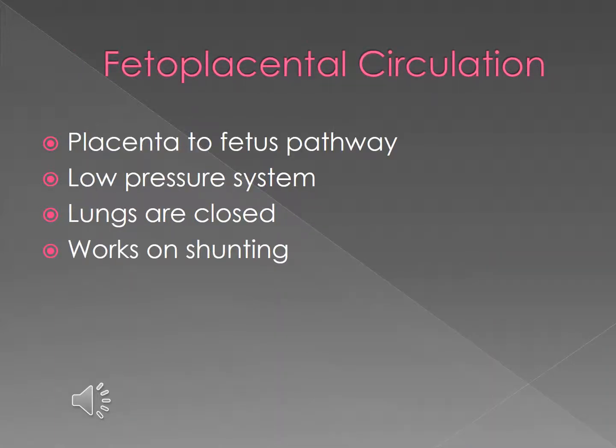The umbilical cord consists of two umbilical arteries which return non-oxygenated blood, fetal waste, and carbon dioxide to the placenta. The umbilical vein brings oxygenated blood and nutrients to the fetus. The fetus depends on the placenta to meet oxygen needs while organs continue formation. Oxygenated blood flows from the placenta to the fetus via the umbilical vein, then through the inferior vena cava to the ductus venosus, where a small amount is routed to the liver and the rest continues on to the atrium.